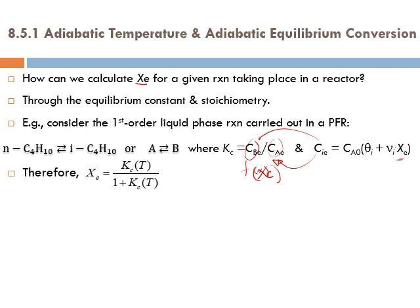Please be careful: this expression for Xe is only suitable for this specific reaction with these given conditions. Different reactions and different conditions will lead to different Xe equations — do not memorize this as a general equation. For instance, in this case we have no B in the feed, so theta_B goes to zero, but in other cases we might have some B in the feed.